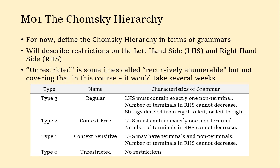Context-sensitive: the left-hand side can now have terminals and non-terminals, or multiple non-terminals — not just exactly one non-terminal. But the rule that the number of terminals on the right-hand side cannot decrease still holds. And then unrestricted — anything goes, no restrictions. We're going to talk about what these different categories of languages mean, how they contribute to computation, and how each category corresponds to a specific model of computation and to the notion of computability.